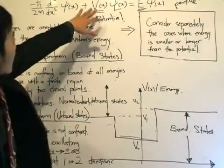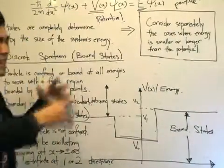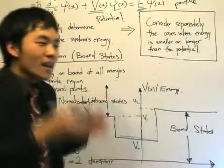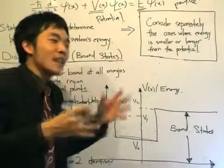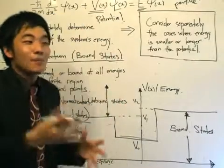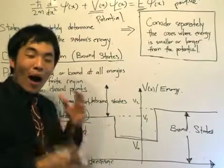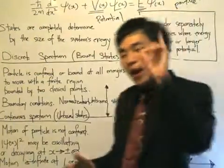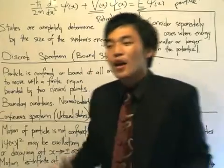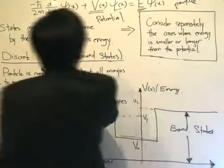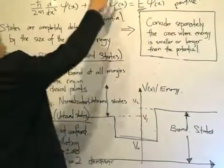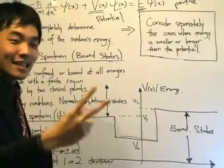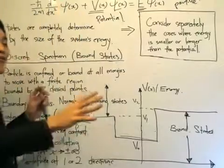This potential V can take all sorts of different types. So really, we need to see that based on the different types of potentials, what are we going to do to solve the solutions? As we compare the potential with the energy, there are two main categories that we can classify them into.